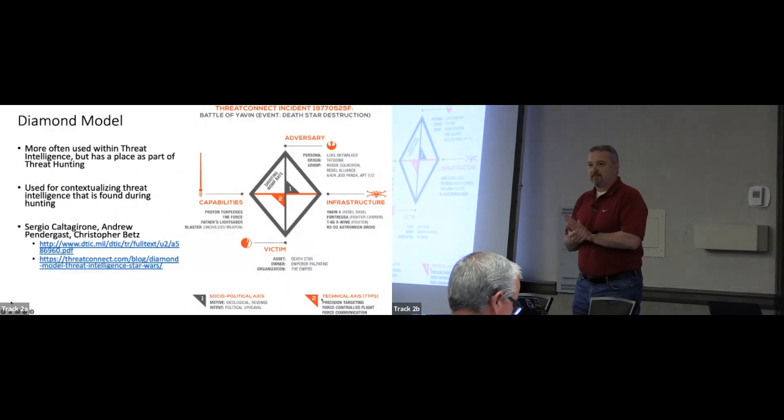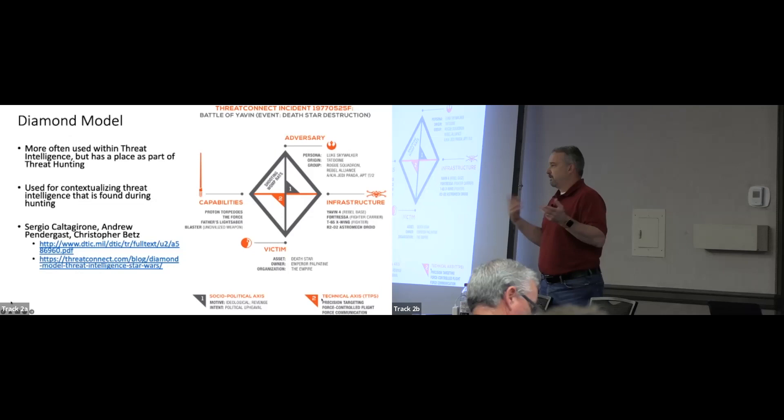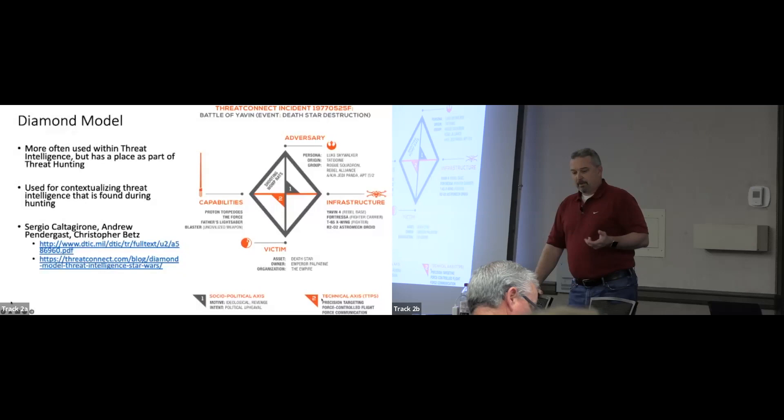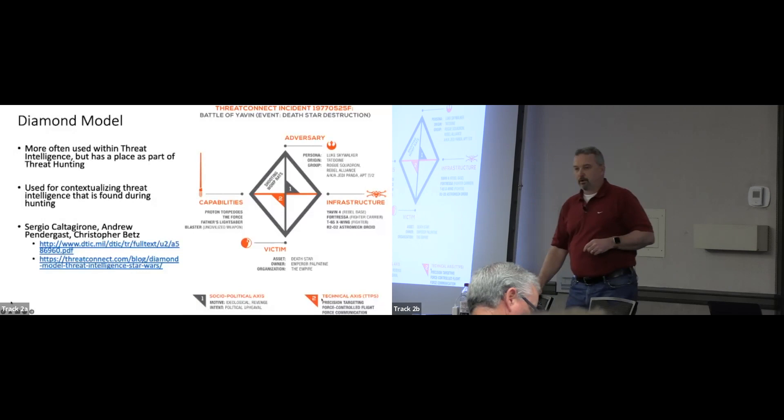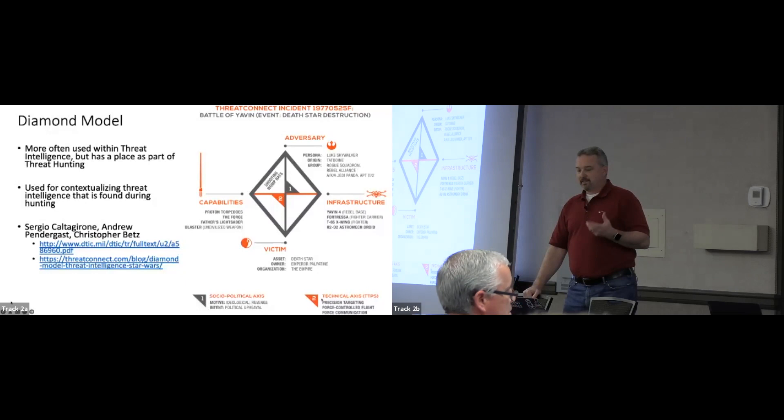Before we dive into the nation state piece — anybody seen the diamond model? About half the people raised their hand. The idea behind the diamond model is to show the inner relationships between an adversary, their victim, the infrastructure, and the capabilities. A couple of really smart guys wrote this white paper a long time ago — you can check out the links, I'll post the slides — and you can read all about the diamond model concept.